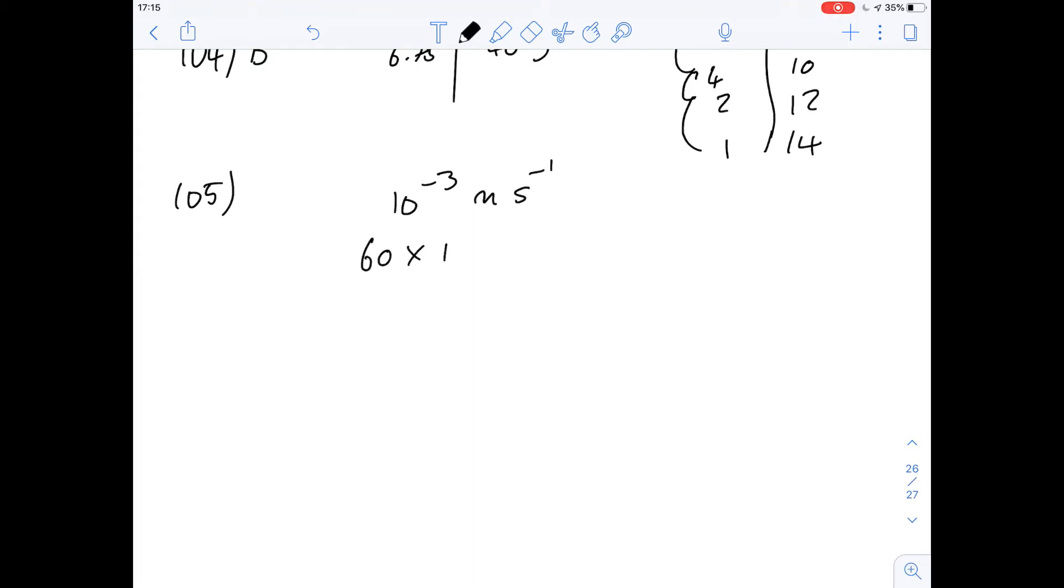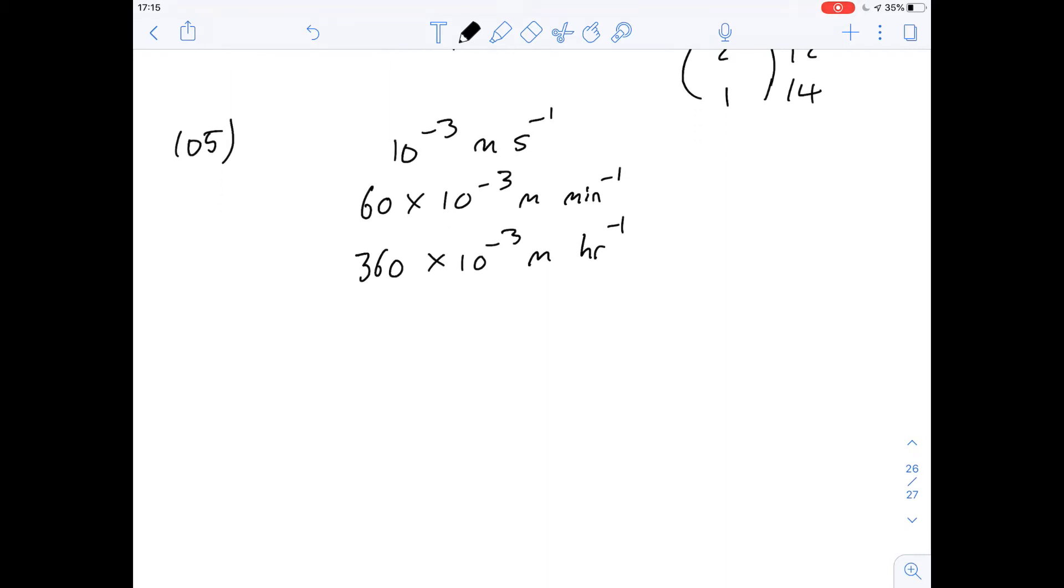So let's say we've got 10 to the minus 3 meters per second, that's going to be 60 times 10 to the minus 3 meters per minute, so 360 times 10 to the minus 3 meters per hour, which is 36 centimeters per hour. So we know that's going to be far too fast. So we can rule out A obviously.